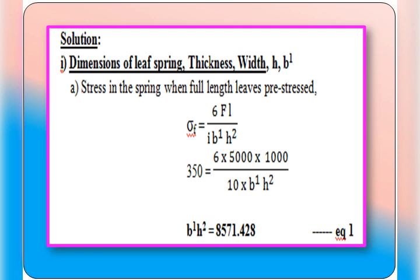Now for the solution: using the stress equation, sigma f = 6 × F × L divided by (i × B dash × H²). Substituting: 350 = 6 × 5000 × 1000 divided by (10 × B dash × H²). By simplifying, we get the product B dash × H² = 8571.428. We call this equation number one.